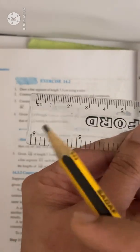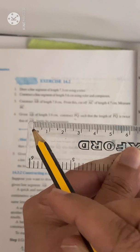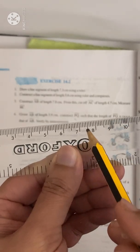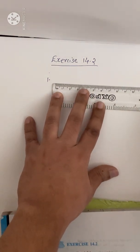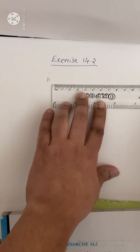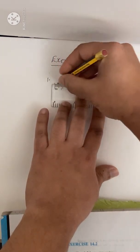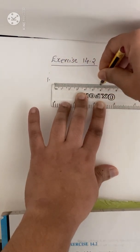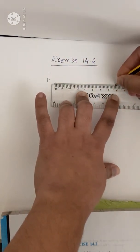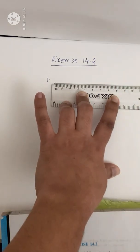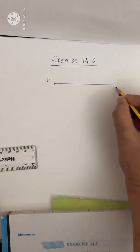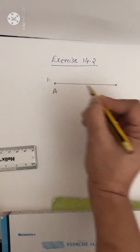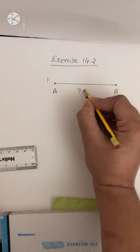So take your ruler. Here they are not asked us to construct or use a compass. So we can use the ruler and mark a point first, because a line segment has two endpoints. From there you have to mark 7.8. You have to look and mark correctly. Give a name for your line segment — let it be A, B — and write 7.8 cm.